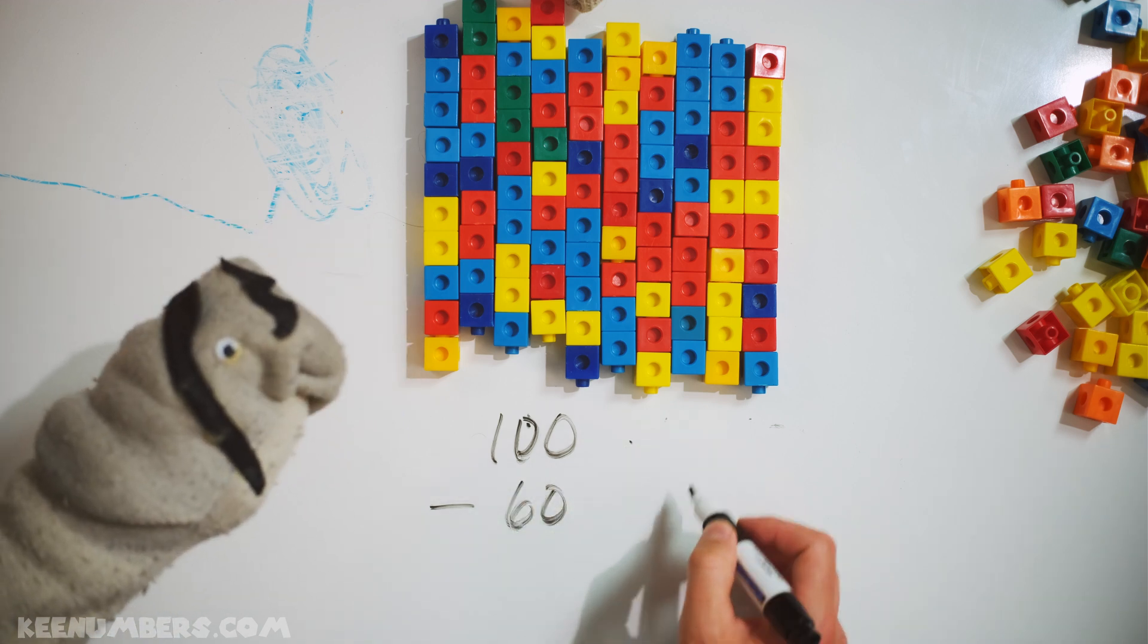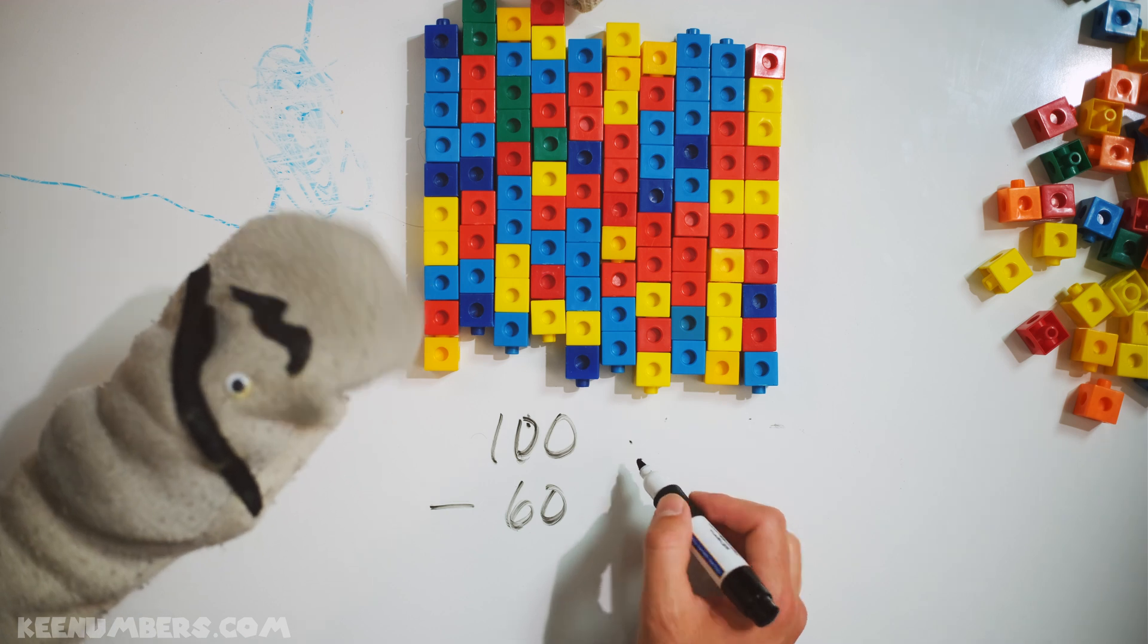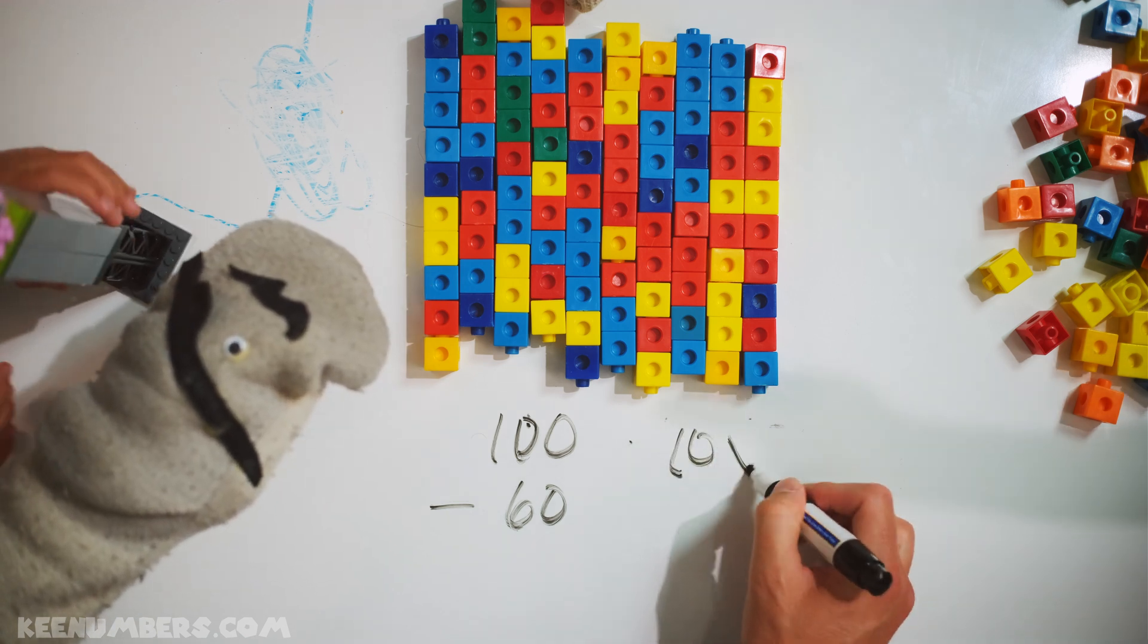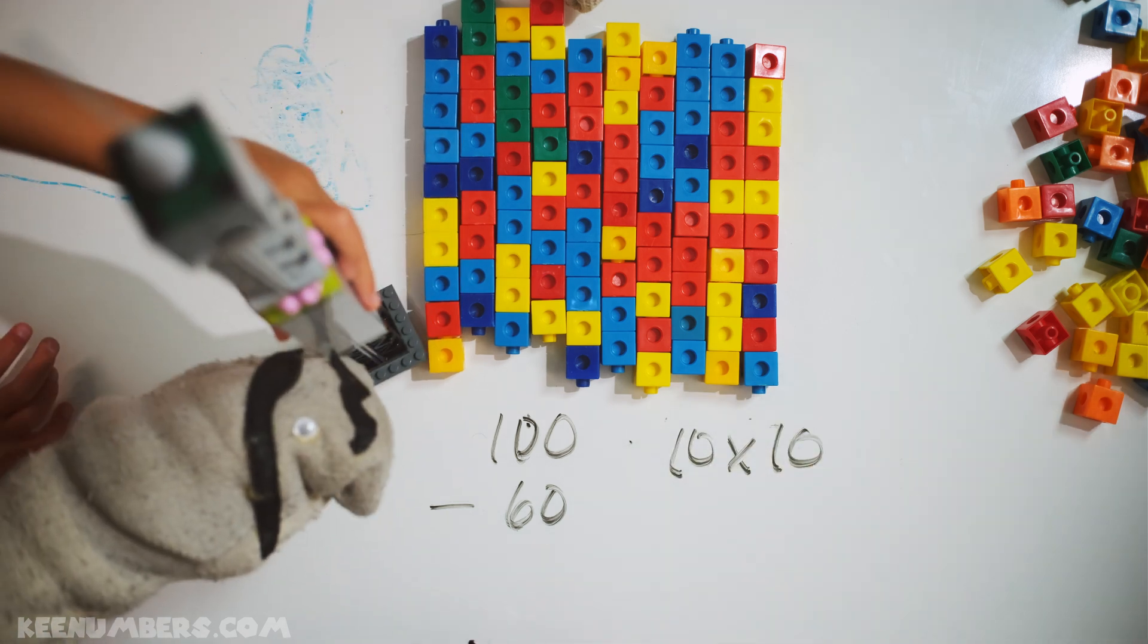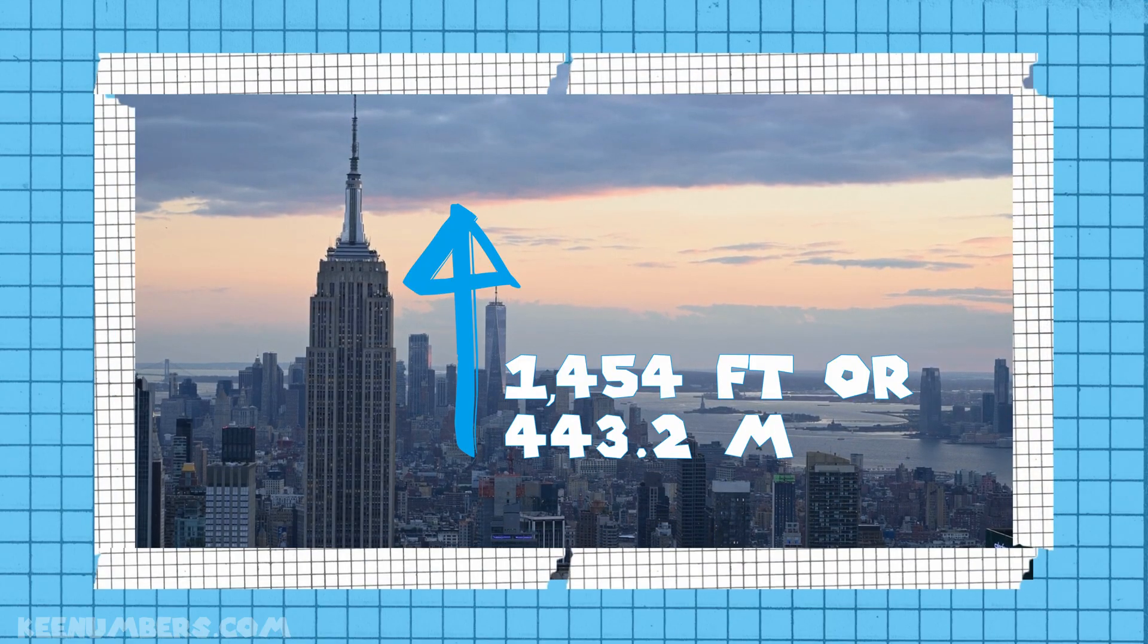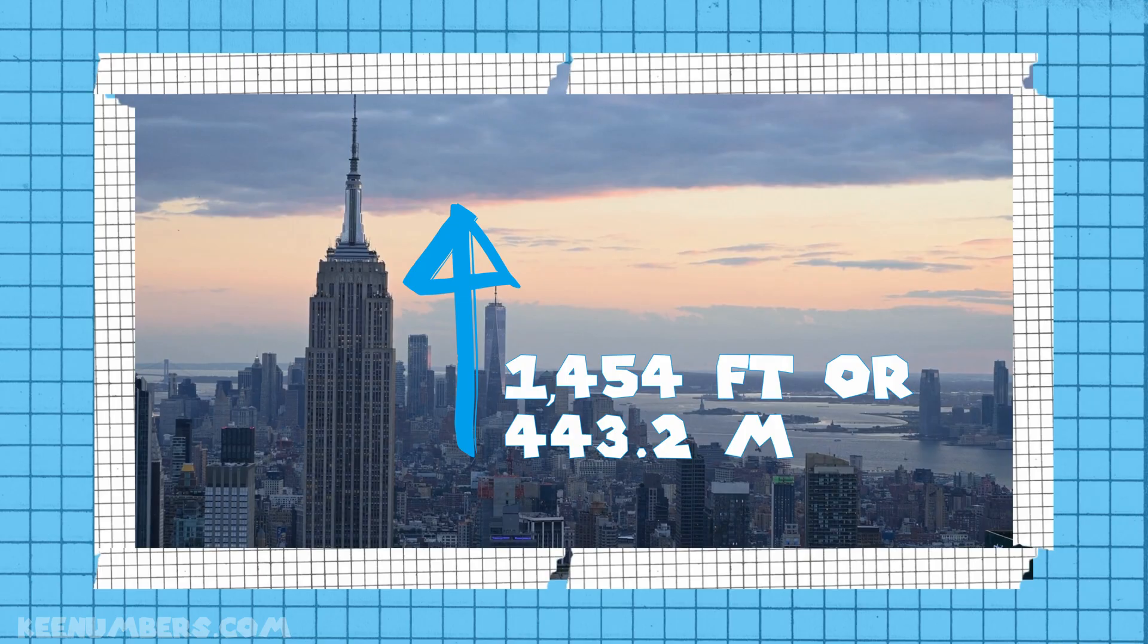Yarrr. So, Pirate Sam, what is 100? Well, that's 10 stacks of 10. 10 stacks of 10. Got it. Empire State Building. Empire State Building. Empire State Building. And what is 60, Pirate Sam? That's 6 stacks of 10.